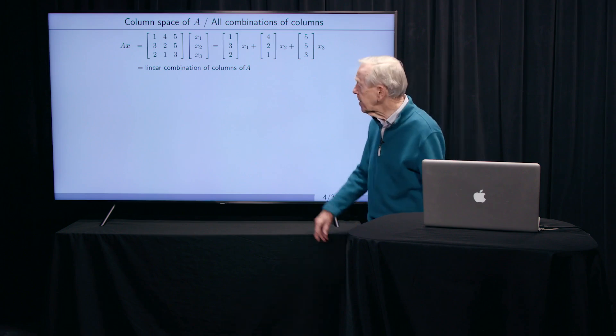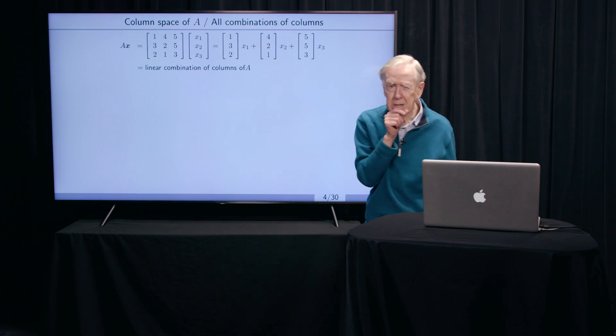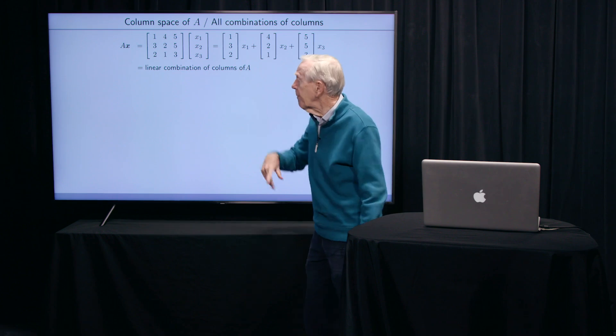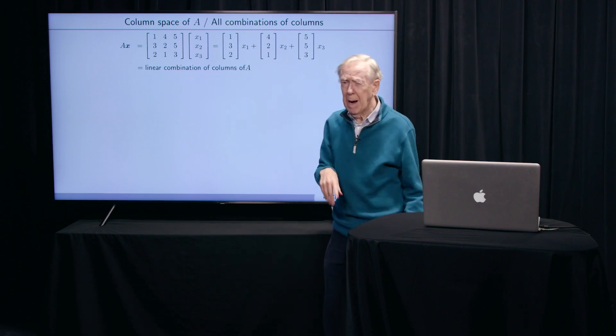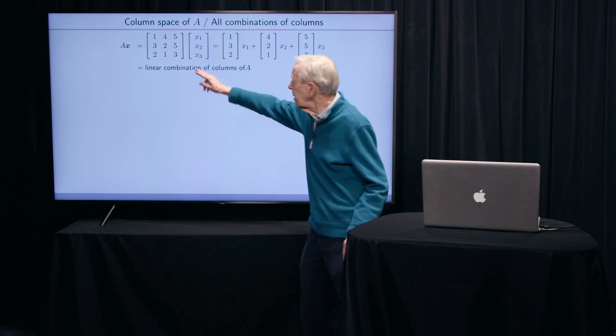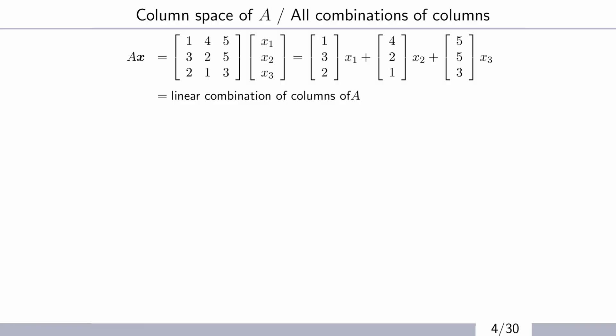So I'm into the start of the column space. That's a word I don't use in the videos for quite a while. But here, you see, I'm using it in the first minutes. So I look at a matrix. First, let's just remember how to multiply a matrix by a vector. There is a matrix A. There is a vector x with three components.